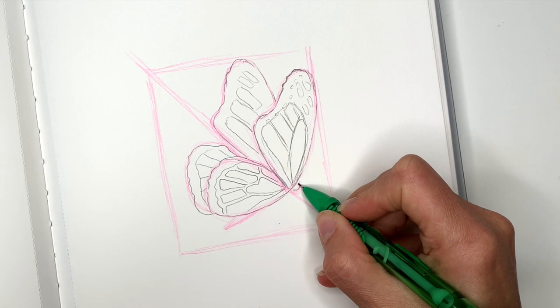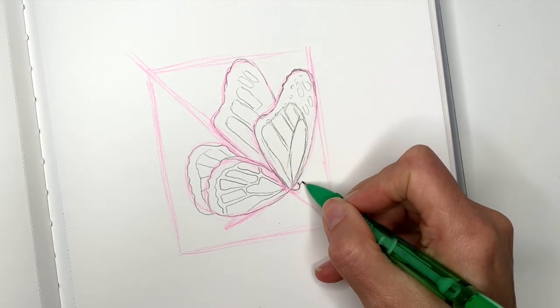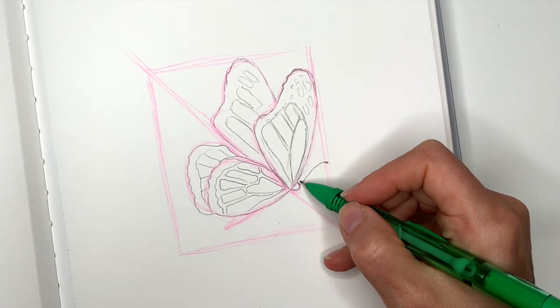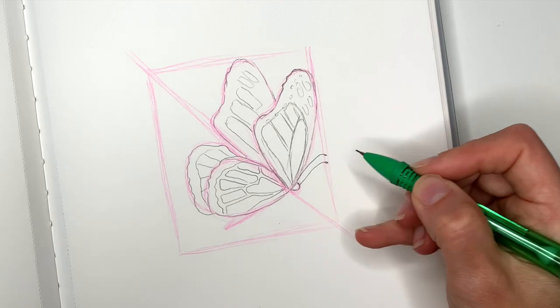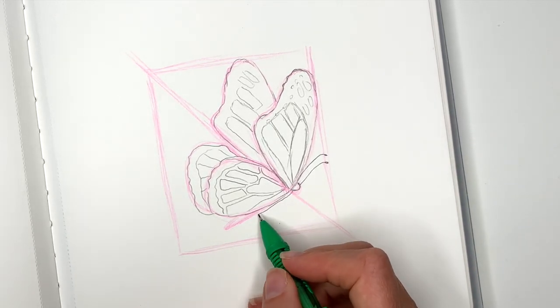We see his head here and the antennae that come all the way to the frame. Maybe we'll see a piece of his body right here.